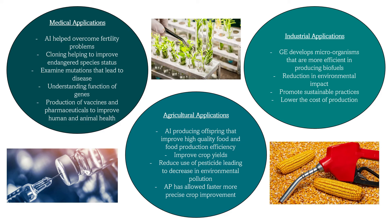Genetic technologies have transformed agriculture by enhancing crop productivity, quality, and sustainability. Artificial insemination has meant that animals with highly favorable characteristics are producing offspring that improve higher quality food and efficiency of food production. The use of transgenic organisms such as BT cotton has helped farmers improve crop yield and reduce the use of pesticide, which decreases environmental pollution and promotes biodiversity. The use of artificial pollination has allowed for faster and more precise crop improvement, accelerating the development of new varieties.